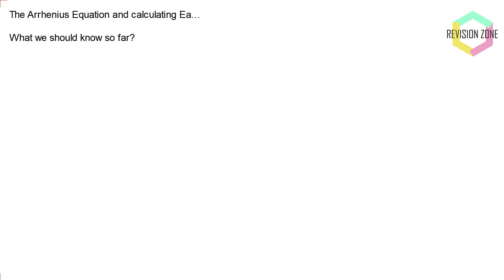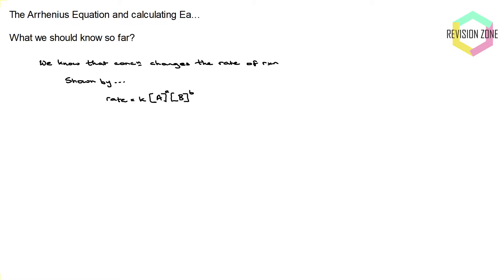So what should we know so far? In regards to the kinetics 2 topic, you will have already covered the rate equation. The rate equation shows how the rate changes when you change particular concentrations of the components within the reaction. It has a rate constant and concentrations of A and B raised to some power — those powers are the orders of reaction. So we know concentration affects the rate of reaction.